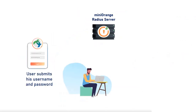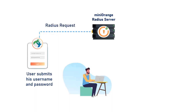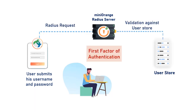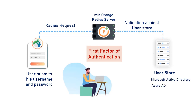The user submits his username and password, which is accepted by the Mini Orange radius server as a radius request. The user can be validated against any user directory like Microsoft Active Directory, Azure AD, OpenLDAP, or you can keep users in the Mini Orange user directory as well.